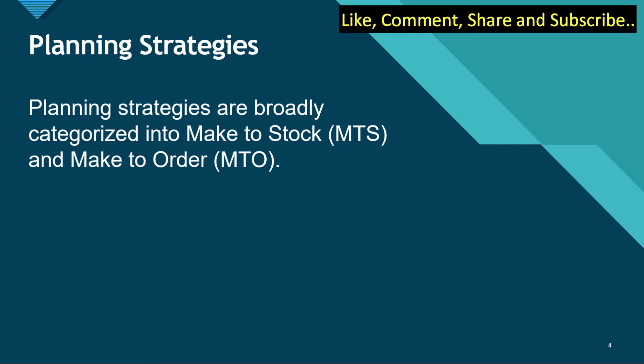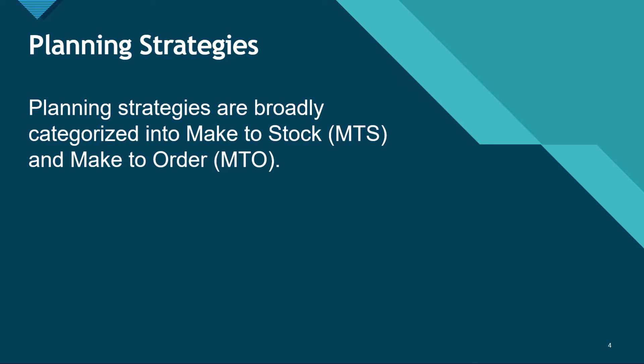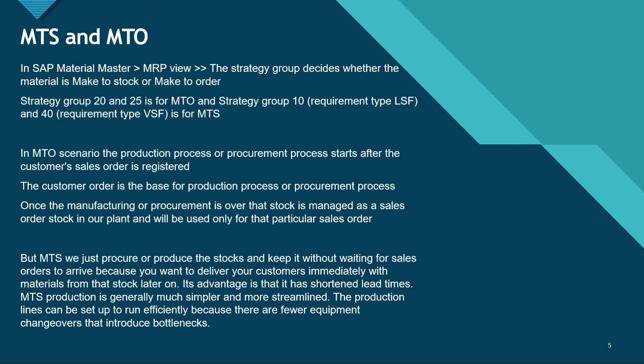Now, very important is the planning strategy. So what are planning strategies? There are two kinds of planning strategies for demand management. The first one is MTS, that is make to stock, and the other is MTO, that is make to order. Now let's discuss the difference between MTS and MTO.